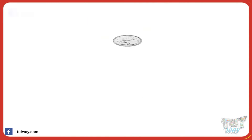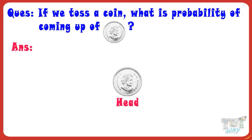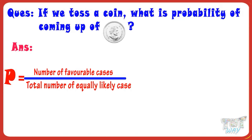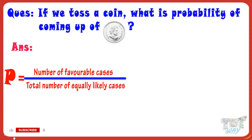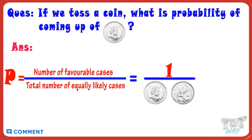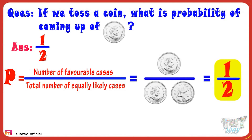Example: if a coin is tossed, what is the probability of occurrence of the head? Our formula is number of favorable cases divided by total number of equally likely cases. The total number of equally likely cases are two — that is, heads or tails. And the favorable case, that is the case for which we want to find the probability, is one — that is, coming up of the head. So, probability of occurrence of the head is one by two.